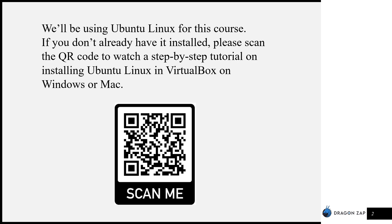Ubuntu Linux is an operating system essentially. We'll be learning Assembler on Ubuntu Linux because Ubuntu Linux is designed for software development. You will be able to apply most of what you learn over to Windows or Mac if you later decide to install the same Assemblers on Windows or Mac. So you can pause the video now, install VirtualBox and Linux, then continue watching where we will install NASM Assembler and GCC.